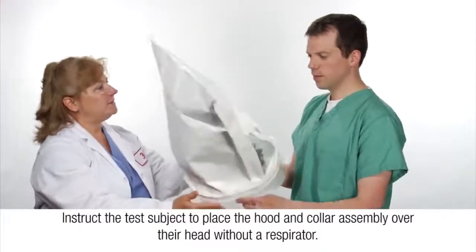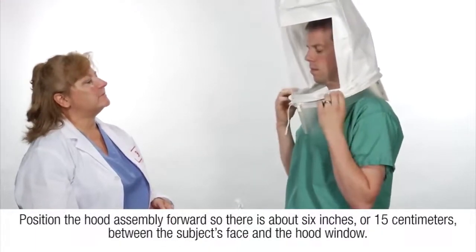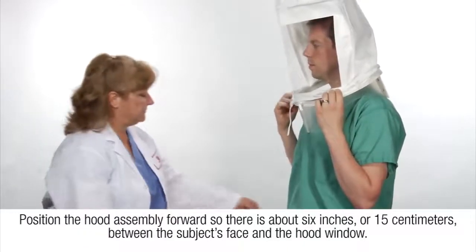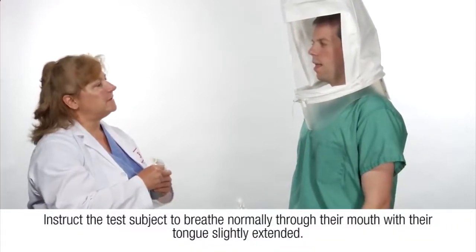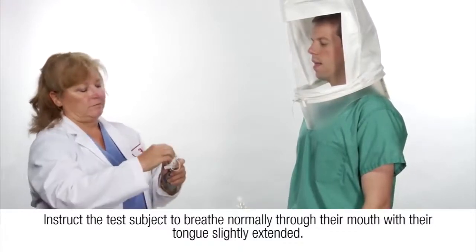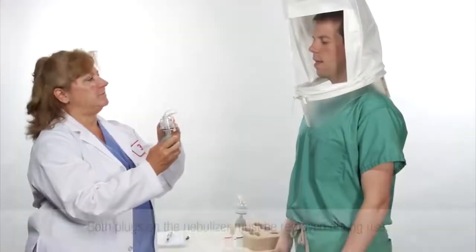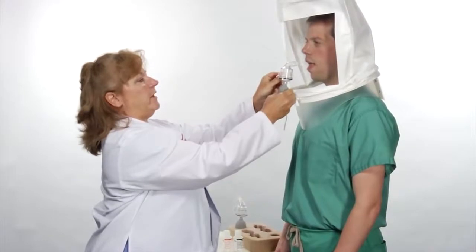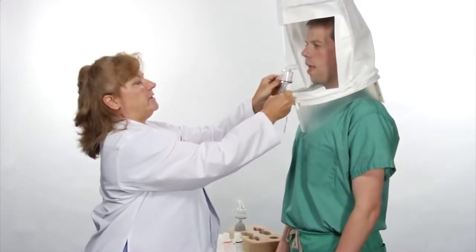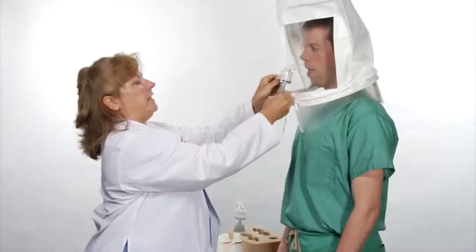To conduct the sensitivity test, instruct the test subject to place the hood and collar assembly over their head without a respirator. Position the hood assembly forward so there is about six inches or 15 centimeters between the subject's face and the hood window. Instruct the test subject to breathe normally through their mouth with their tongue slightly extended. Both plugs on the nebulizer must be removed during use. The nebulizer must be held in an upright position to ensure aerosol generation. Using the first nebulizer with the sensitivity solution, inject the aerosol into the hood through the aperture in the hood window. Squeeze ten times, always fully collapsing the nebulizer bulb on each squeeze. Allow the bulb to extend fully between squeezes.